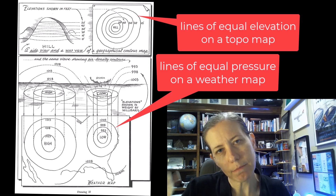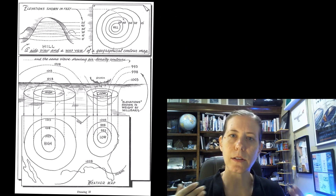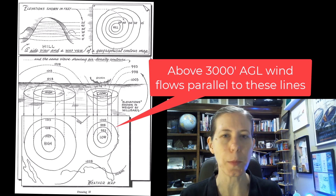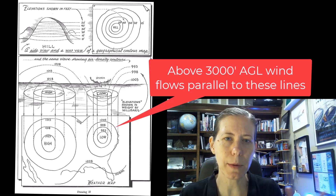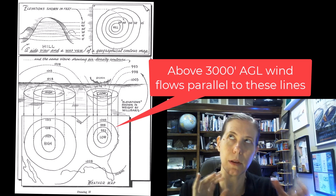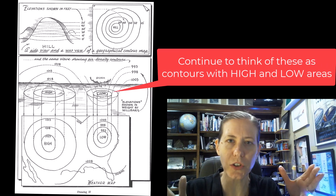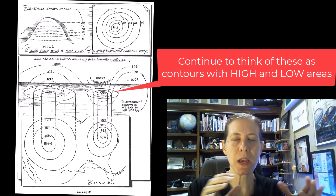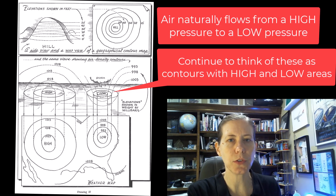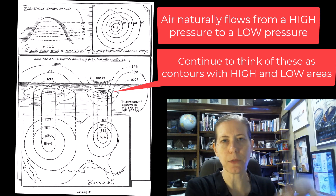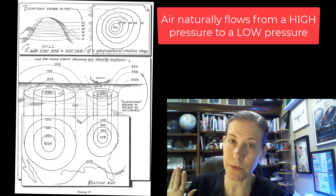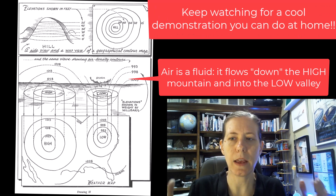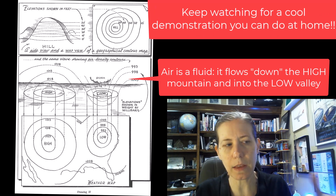At altitude, at about 3,000 feet above the ground, air is going to flow parallel to the isobars. This is where the book got really interesting for me, because they describe how air forms a high pressure bubble kind of like a mountain. Air naturally flows from the high to the low — it flows off the mountain into a valley. That actually makes sense. If you think of liquid, and air is a fluid, like water flowing down a mountain and going into a valley, that makes sense.